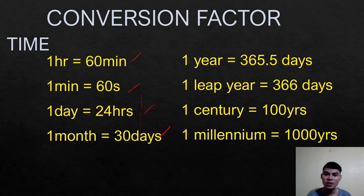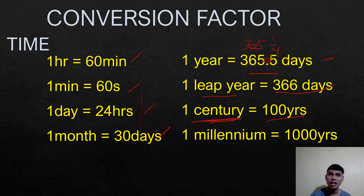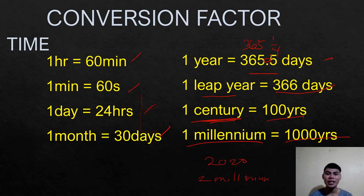One day is 24 hours. One month is 30 days. One year is 365 and one-fourth days, or 365.25 days. A leap year, every four years, has 366 days and includes February 29. One century is 100 years — a centenarian has reached 100 years old. One millennium is 1,000 years, so the year 2020 represents two millennia and twenty years.